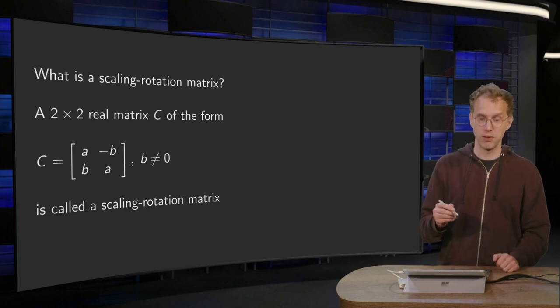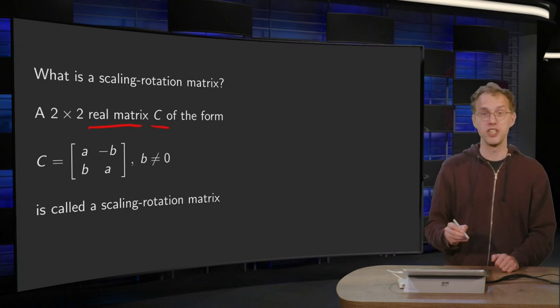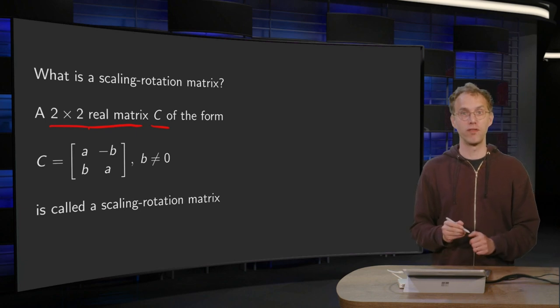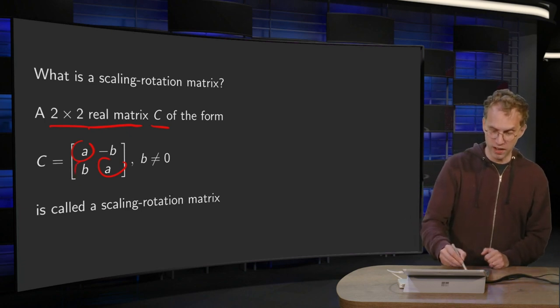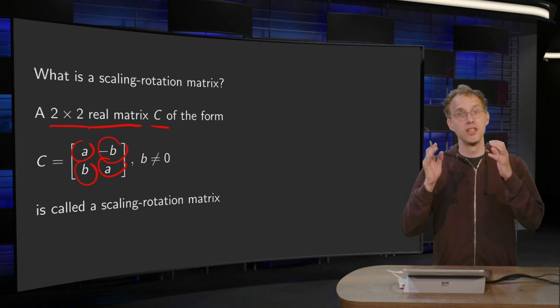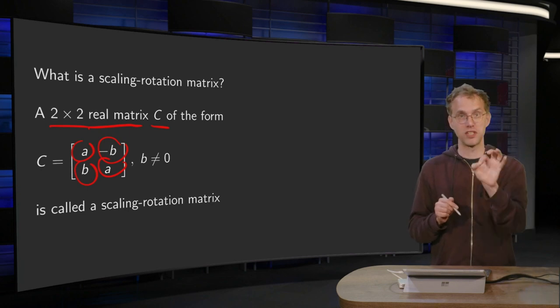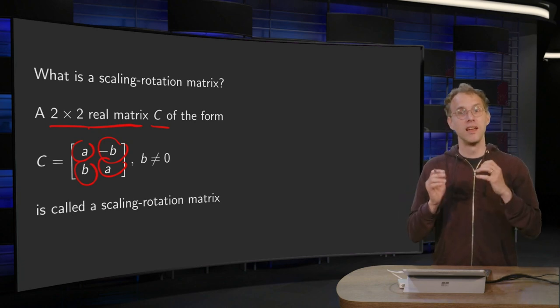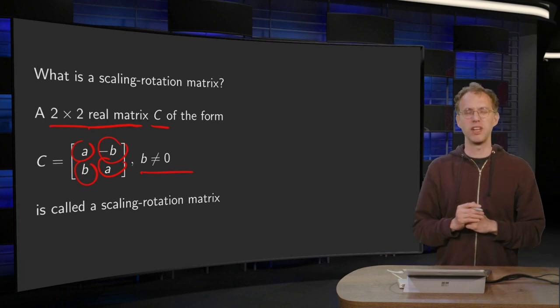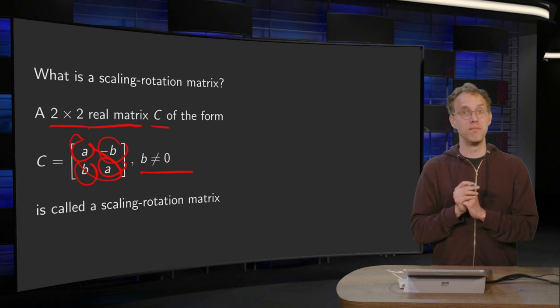So what is a scaling-rotation matrix? We will call those C matrices. It is a real matrix C, 2×2, of the following form: the elements here are the same, a and a, and the elements on the off-diagonal ones are the same up to a sign. So a scaling-rotation matrix is determined by two numbers a and b. If you fix the first one a and fix the second one b, then the other two, a and minus b, are also specified. And we also impose a condition: b is not equal to 0. Because if you put b to 0 it becomes a bit silly, then you just have a diagonal matrix. So we usually look at matrices where we have b non-zero.